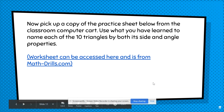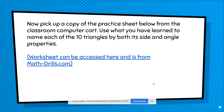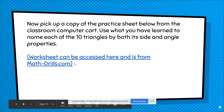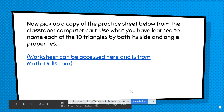If you're in my class, go ahead and pick up a copy of the practice sheet from the classroom computer card. Use what you've learned to name each of the 10 triangles by both its side and angle properties. You can use your notes from the last time we did this in class or from what you just took now. If you're not in my class, you can access this worksheet by clicking the link — it's provided by mathdrills.com. Let me know if there are any questions or comments.